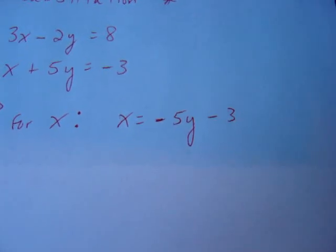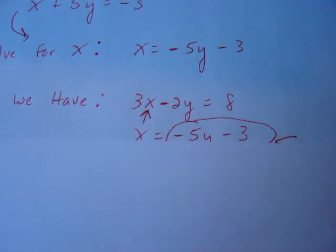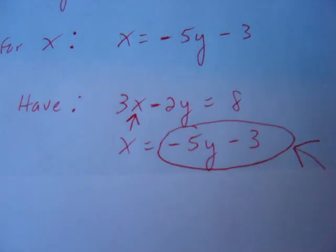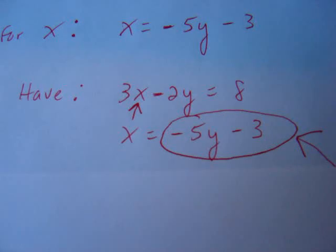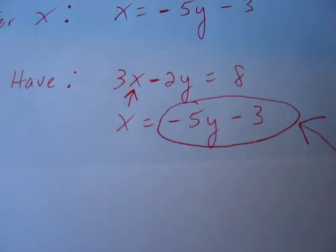I think we can all handle that much. So now we have our top equation, which is 3x minus 2y equals 8, and we have our new one that we just solved for x: x equals negative 5y minus 3.